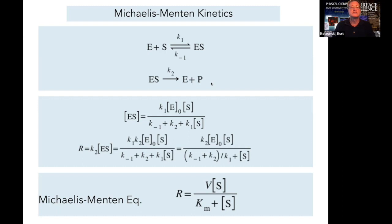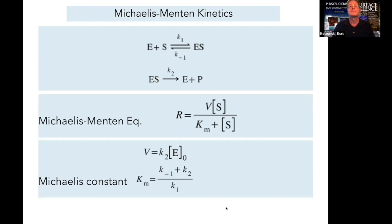When rearranged into this form, we call that the Michaelis-Menten equation, that the rate of reaction is equal to V times the concentration of the substrate. V is given by K2 times E naught, and the Michaelis constant Km is given by this ratio of rate constants.